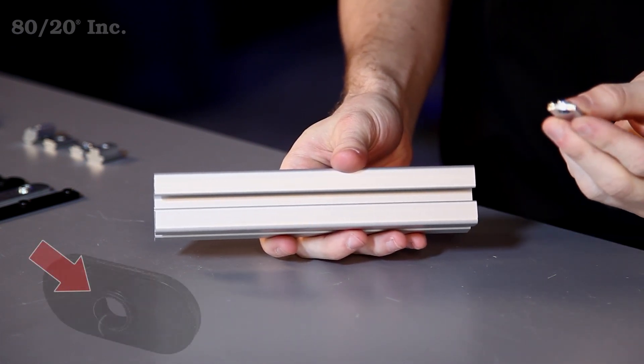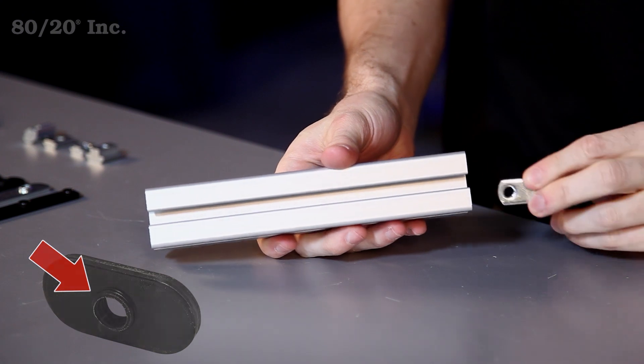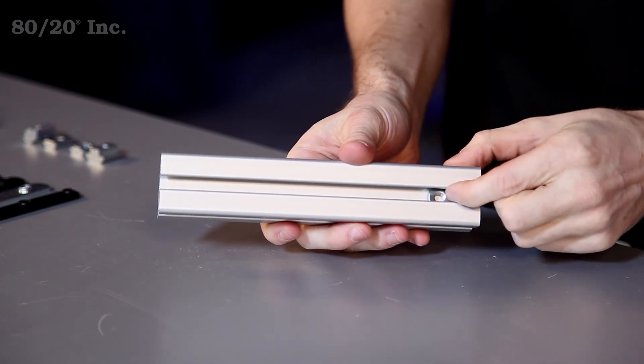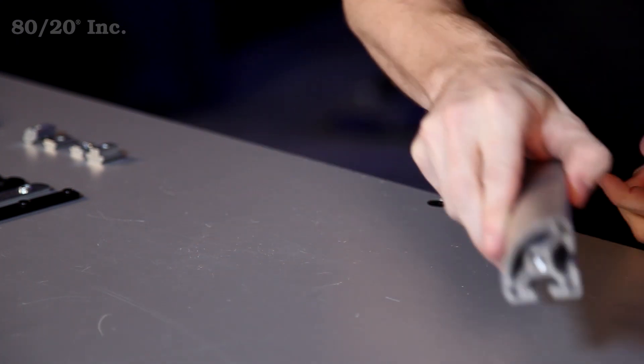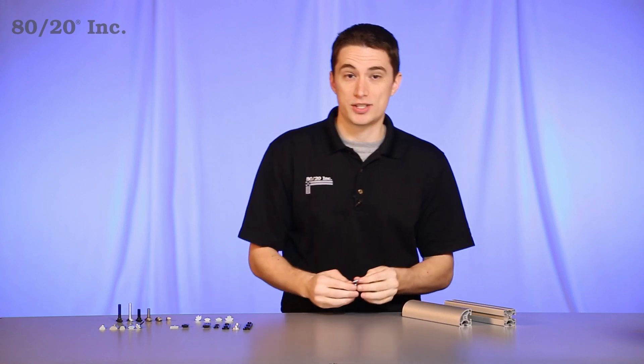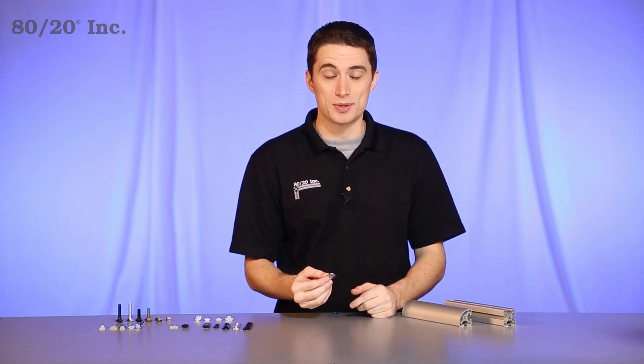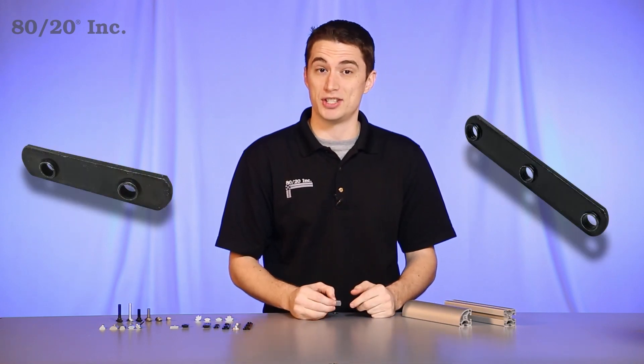However, you want to make sure that the pilot projection is facing downwards or towards the middle of the profile. The great thing about this T-nut is that you can substitute out a single T-nut sometimes for a double and a triple T-nut to save you time on your build.